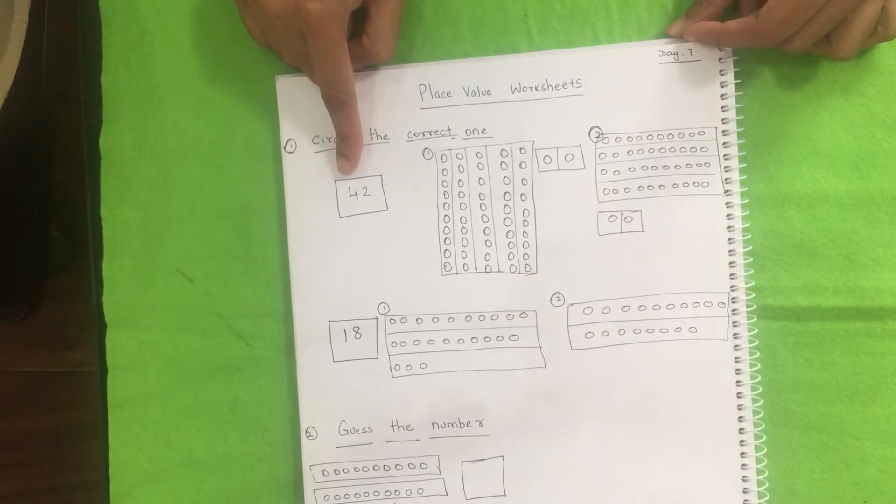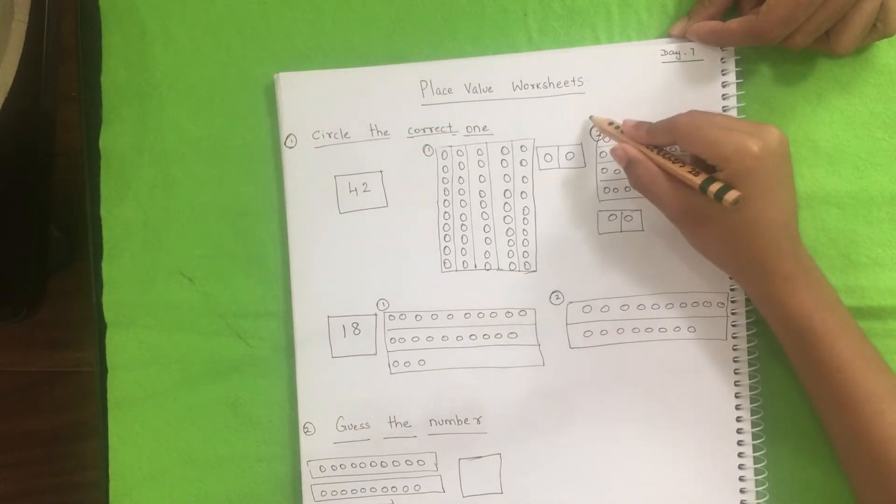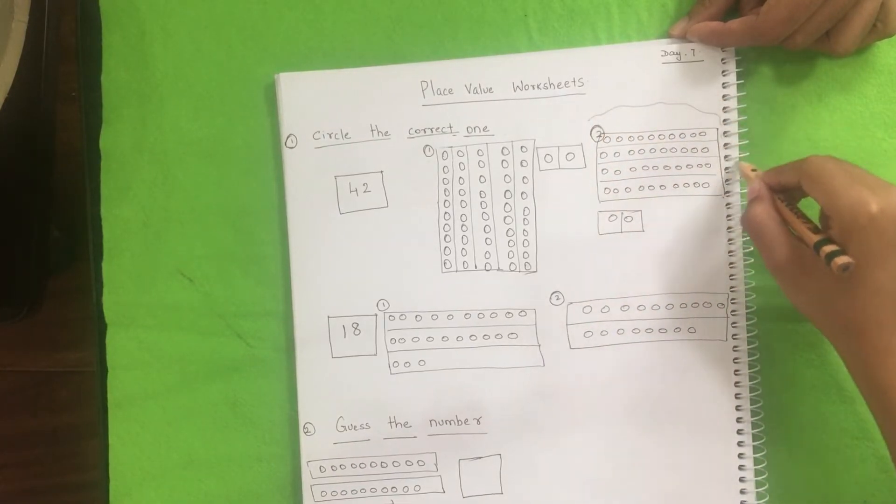What number is this? Forty two. So how many tens and how many units are here? Four tens and two units. So from these options which do you think is matching to it? This one. Okay, fine.